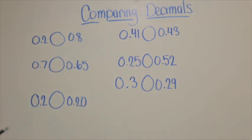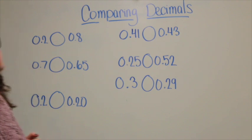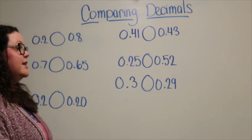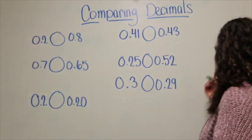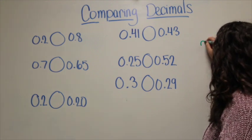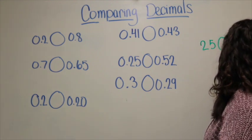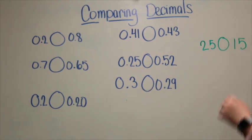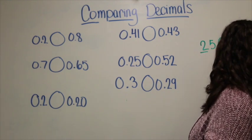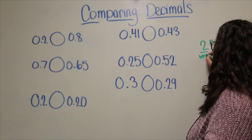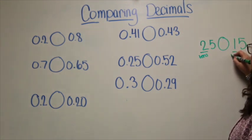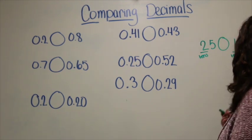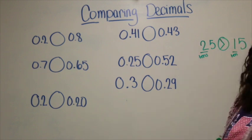We're going to jump right in with some comparing decimals. I'm going to start with something you learned in third grade and compare just some numbers. If I gave you the number 25 and 15, and I said compare these two numbers, you would start in your tens place and say: in 25 I have two tens, and in 15 I only have one ten, and I know that two tens is greater than one ten.